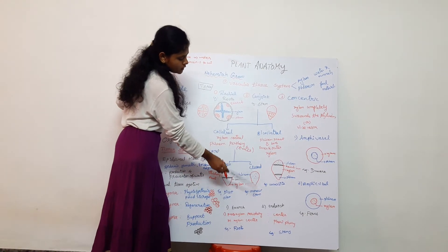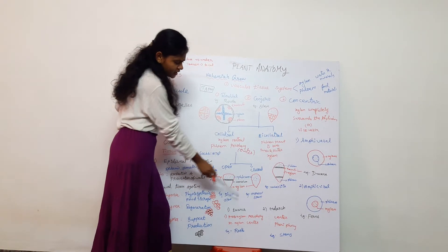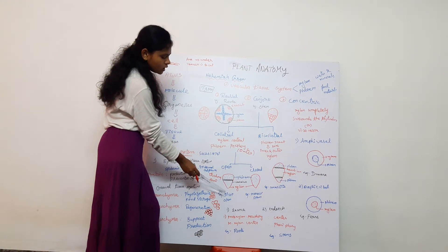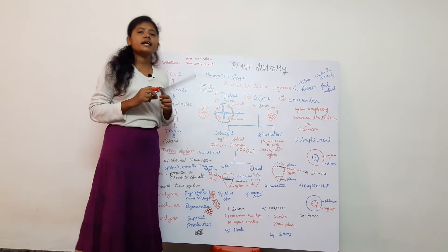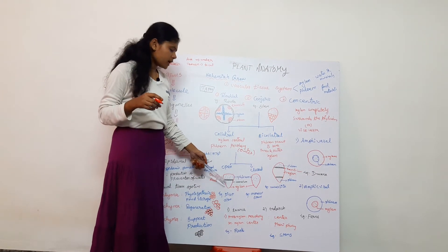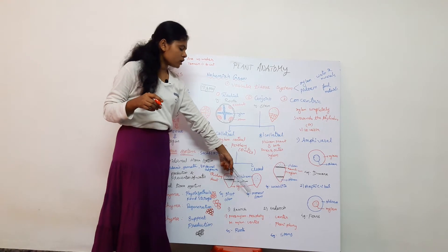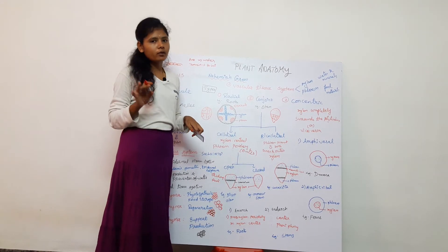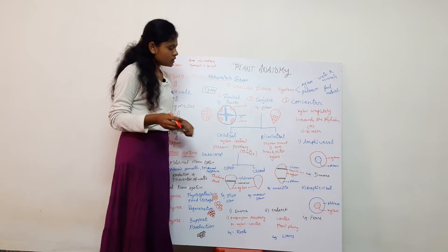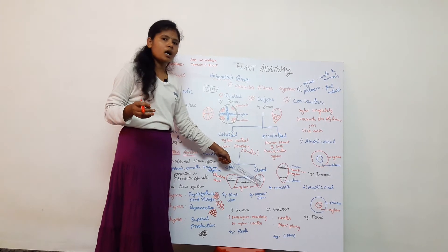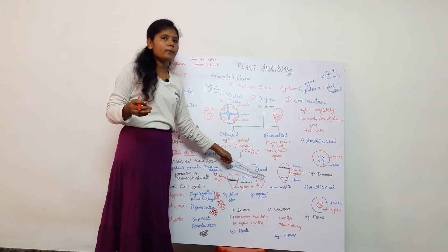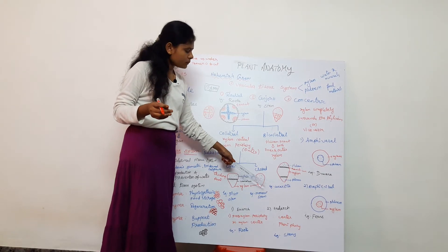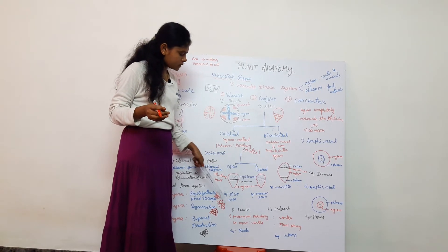The closed type of collateral bundle is found in the monocot stem. Secondary growth is present in dicots, which is why cambium is formed. In monocots like grass and palm, there is no secondary growth, so cambium is absent in the monocot stem.